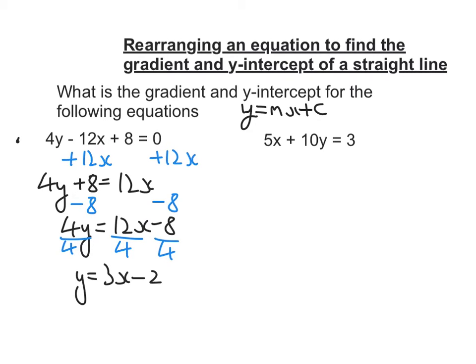So now I have it in the form that I need it, y equals mx plus c, and now I can simply read off what they are. So m is going to be 3, and my y-intercept is going to be the point 0, negative 2.